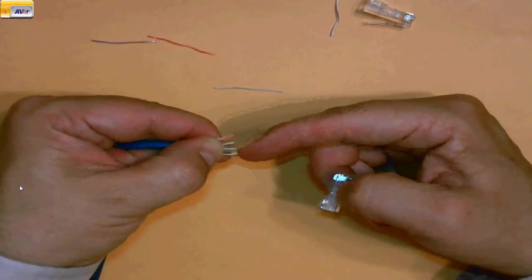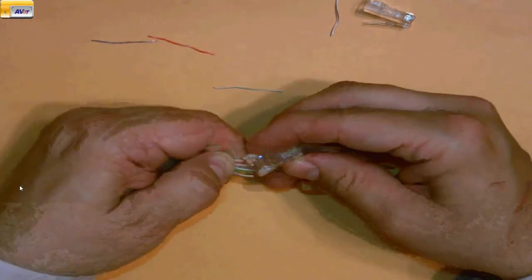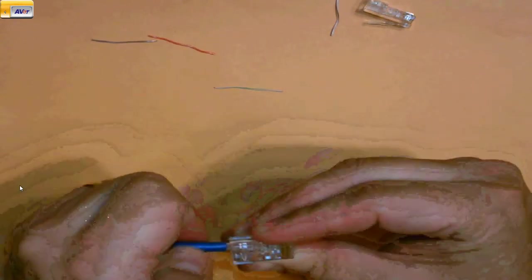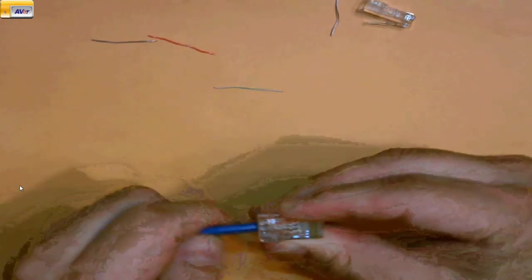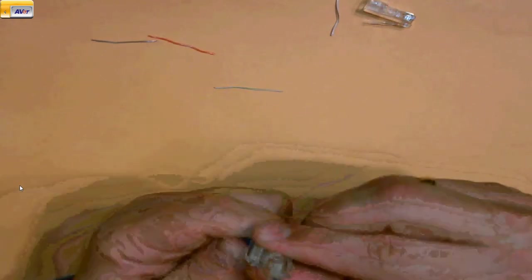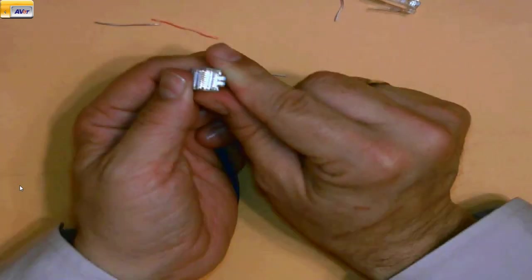Okay so we have orange white orange green white blue blue white green brown white brown. I fit it into my jack. This can be a little bit tricky sometimes. Squeeze it in.